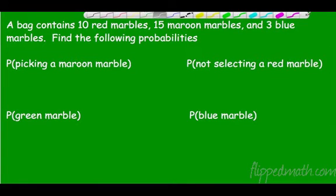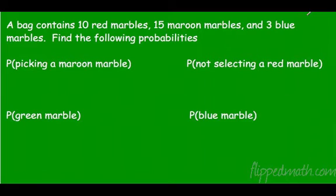Alright, let's get down to it. A bag contains 10 red marbles, 15 maroon marbles, and 3 blue marbles. Find the following probabilities. Remember, probability is out of a total, so the total number of marbles we have here is 28. How many of those are maroon? We have 15, so 15 over 28 doesn't reduce.